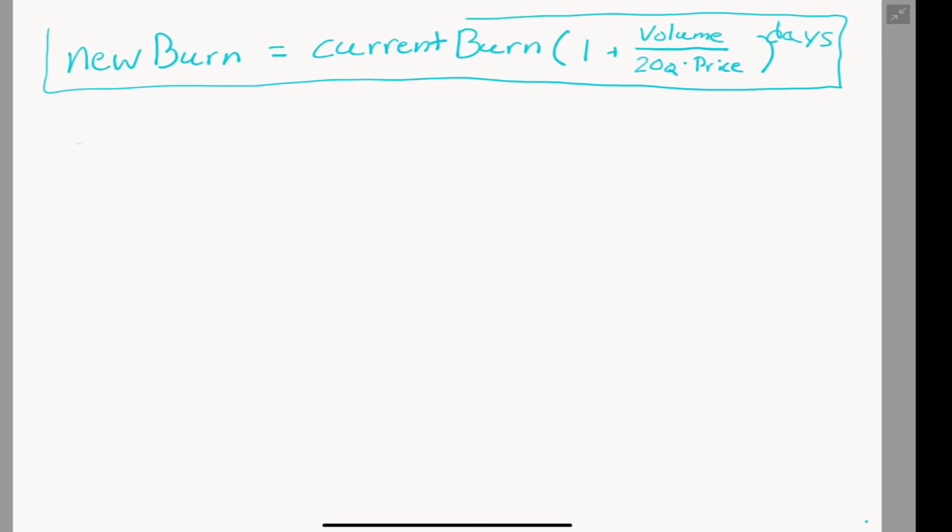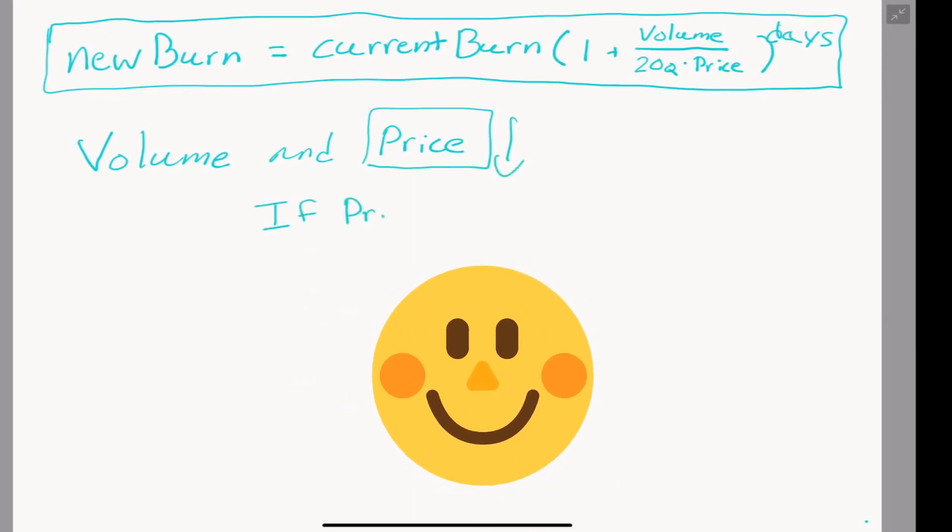Now we have our fancy equation for evaluating the burn. It becomes more complicated since we have two variables to account for instead of just one: both volume and now price. This is where I realized that we actually want the price of SafeMoon to stay low over the next couple months. As long as the price stays low, we could burn down to as low as 100 trillion coins this year.